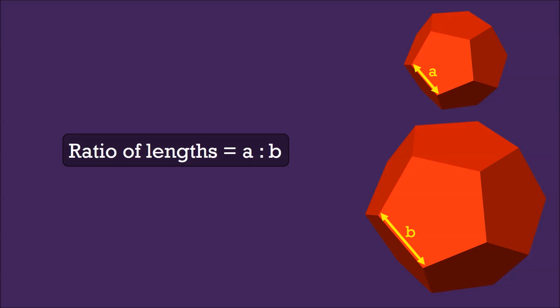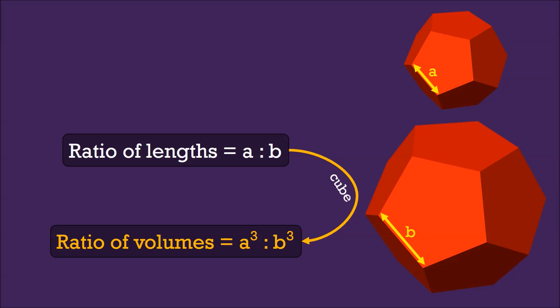So, why not let us just generalize this correlation? Now, suppose we have 2 similar solids, and they have corresponding lengths of a and b. Now, the ratio of the lengths will be a:b. If you want to cube this ratio, it then gives us the ratio of the volumes.